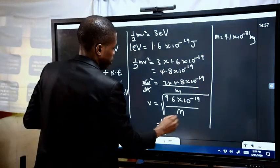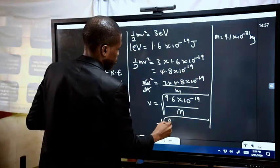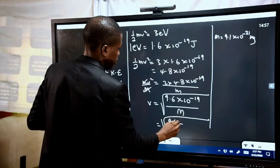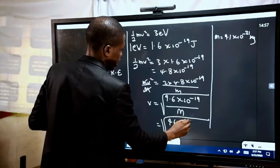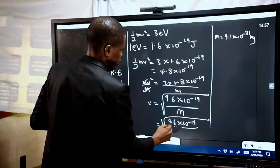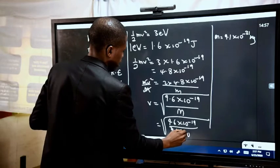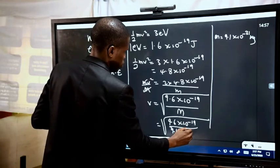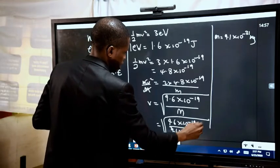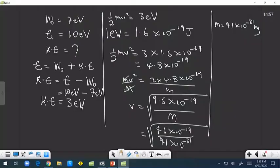Using the mass of the electron as 9.1 × 10⁻³¹ kg, v = √(9.6 × 10⁻¹⁹ / 9.1 × 10⁻³¹). You can complete this calculation using your calculating device.